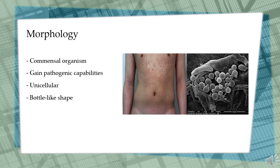Malassezia furfur is a unicellular organism which varies in size. The cells have a bottle-like shape with a small protrusion visible at the end of each cell. Malassezia furfur forms filaments when it becomes its pathogenic form.